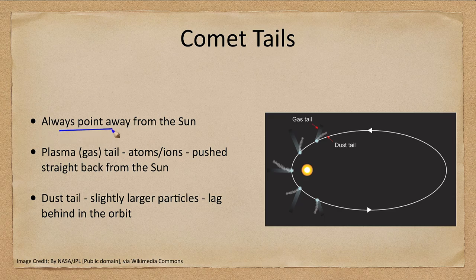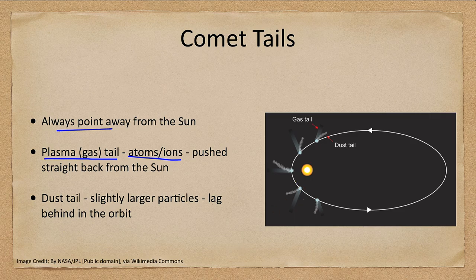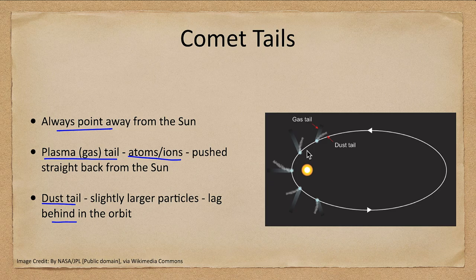The tails always point away from the sun. When the comet is coming in on its orbit they lag behind; when the comet is heading back out they lead. The plasma or gas tail consists of individual atoms or ions and is pushed straight back from the sun. The dust tail is slightly larger particles that lag behind in their orbit — the heavier particles that always fall behind as the comet moves.